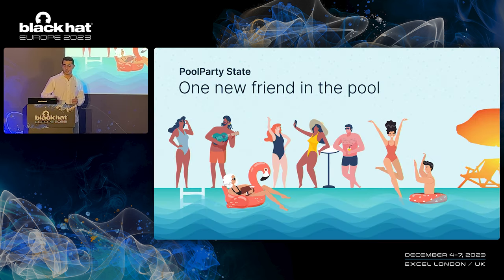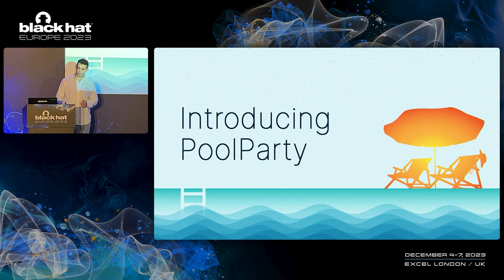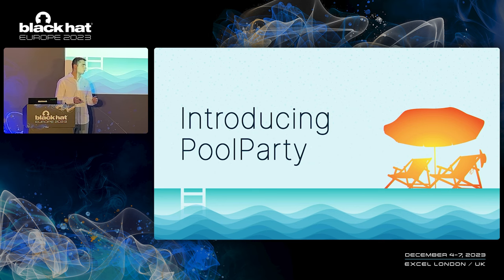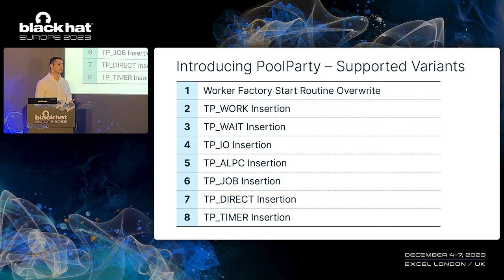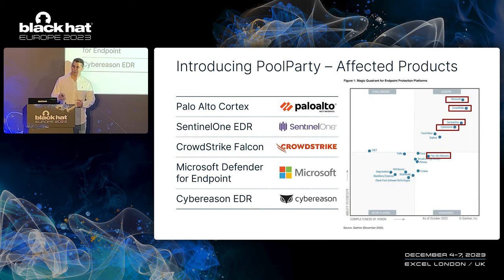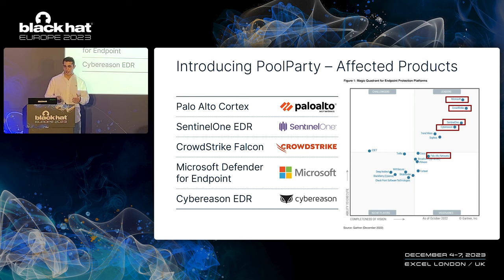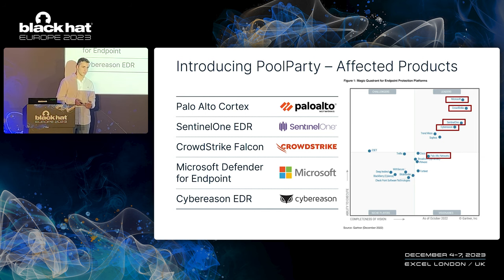With eight friends in the party, let me introduce you to the Pool Party tool for the first time ever. Pool Party supports eight variants, starting from the start routine abuse to the insertion of any work item that the thread pool supports. Pool Party effectively bypasses Palo Alto Cortex, SentinelOne, CrowdStrike EDR, Microsoft Defender for Endpoint, and Cybereason — leaders in endpoint protection according to Gartner's Magic Quadrant. Pool Party achieved 100% success rate, as none of the EDRs tested was able to detect or prevent Pool Party attacks.